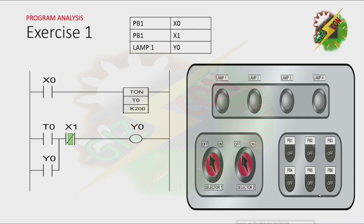Let's analyze my program first — this will be my answer. When PB1 is pressed, X0 is energized, and that will cause this timer to be activated after 2 seconds.